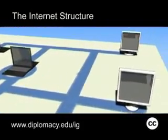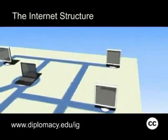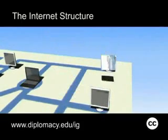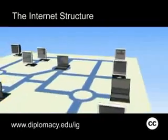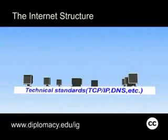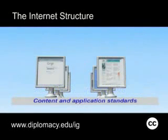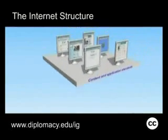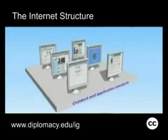TCP/IP controls the traffic flow on the Internet by dividing email, web data, and other Internet traffic into packages before sending them through the net. The top layer includes content and application standards, such as HTML, XML, and JavaScript.